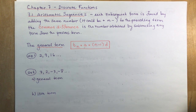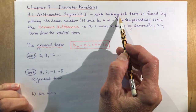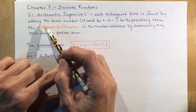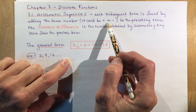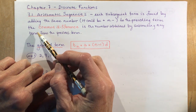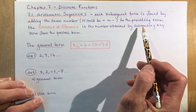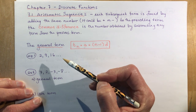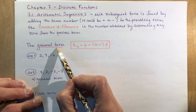An arithmetic sequence says that each subsequent term — 'subsequent' means the one following it — is found by adding the same number. You could be adding a positive or a negative number to the preceding term, which is the term before it. The common difference is the number obtained by subtracting any term from the previous term. Let's take a look at what that actually means.